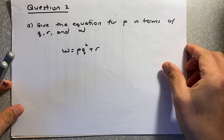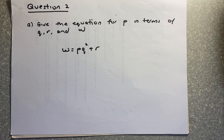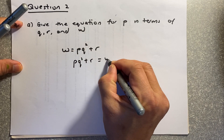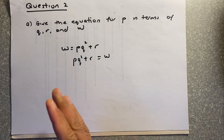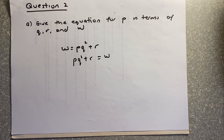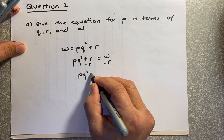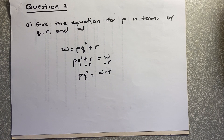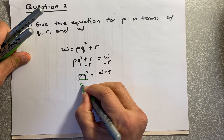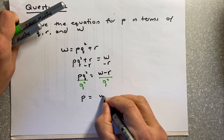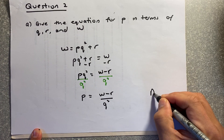Now question 2: making p the subject of formula. First, swap the equation so p is on the left hand side: pq² + r = w. Subtract r from both sides to get pq² = w − r. Then divide both sides by q², so p = (w − r) / q². That will be an achieve.